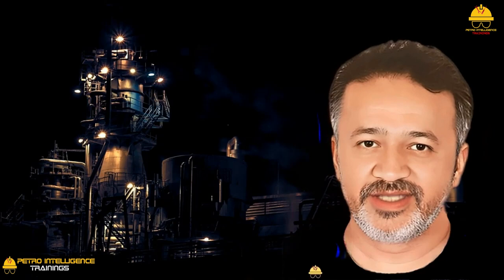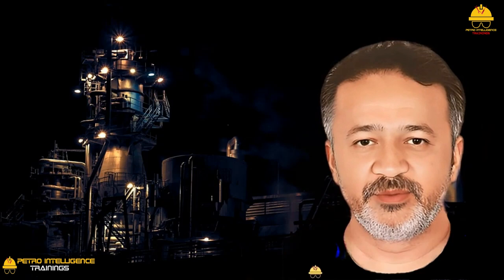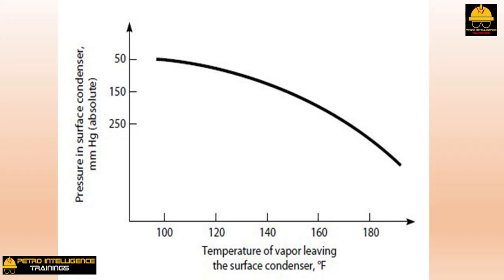To determine whether poor vacuum in a surface condenser is due to jet problems, measure the surface condenser vapor outlet temperature and pressure and plot the point on a diagnostic chart. If the point is somewhat below the curve, the vacuum loss is due at least in part to jet deficiencies. Surface condenser problems include undersized surface area, waterside fouling, lack of water flow, condensate backup, leaking seal strips around the air baffle, and excessive cooling water inlet temperature. If the plotted point is on or slightly below the curve, poor heat transfer in the condenser itself is hurting the vacuum.